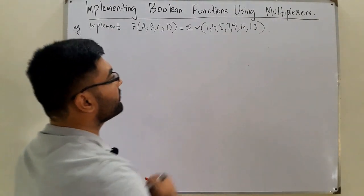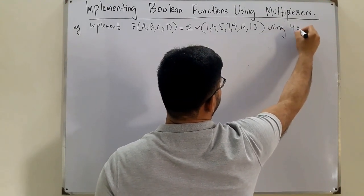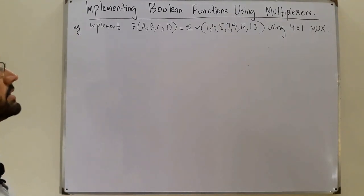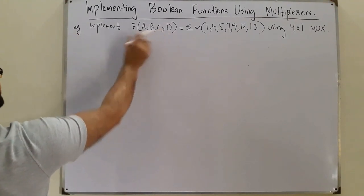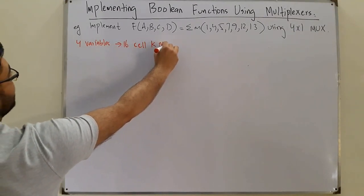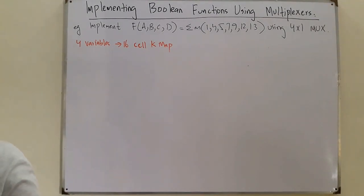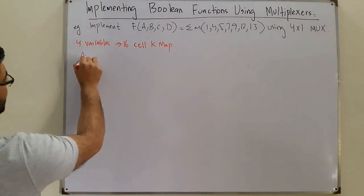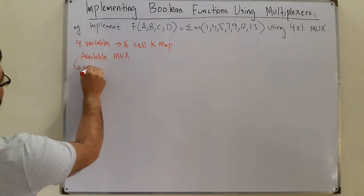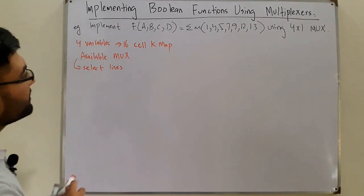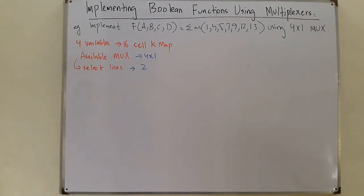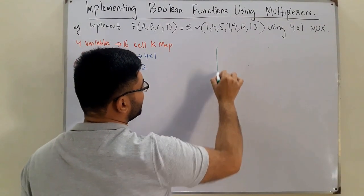We have four variables, which means we need to draw a 16-cell K-map. Then we check the available MUX, which is a 4x1. A 4x1 multiplexer has 2 select lines. Now let me draw this 16-cell K-map.